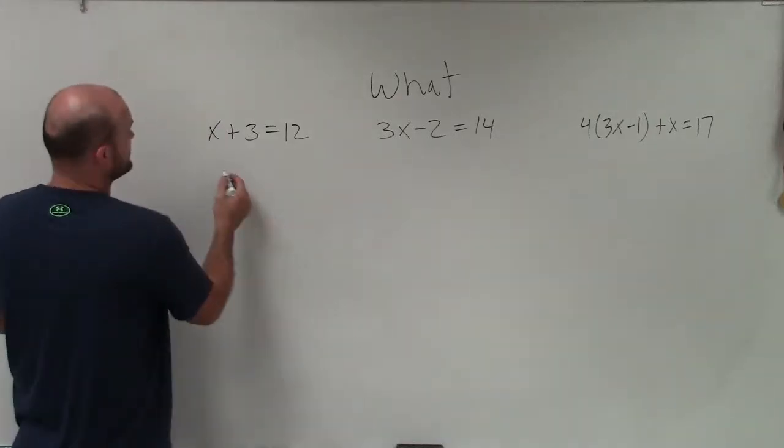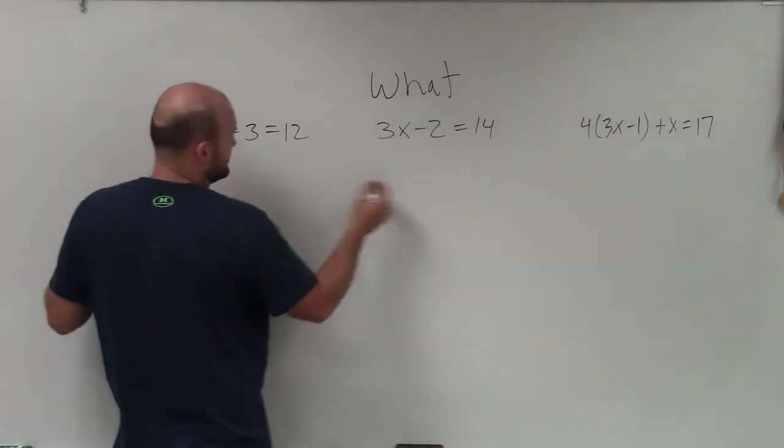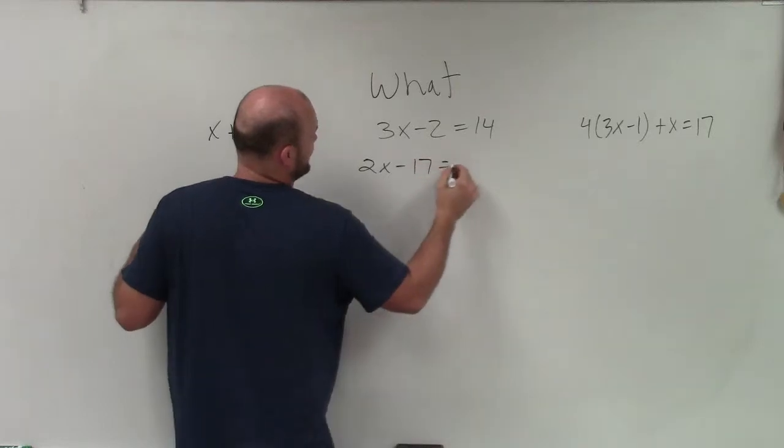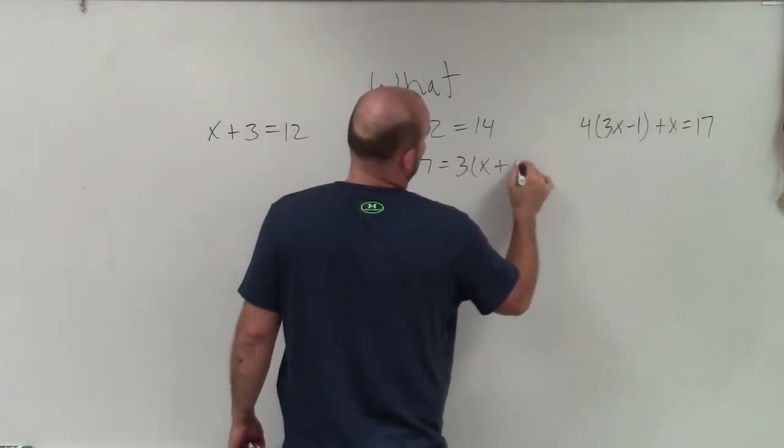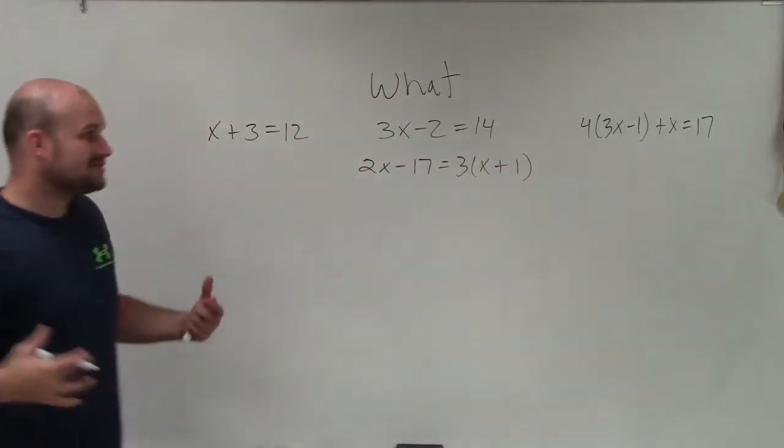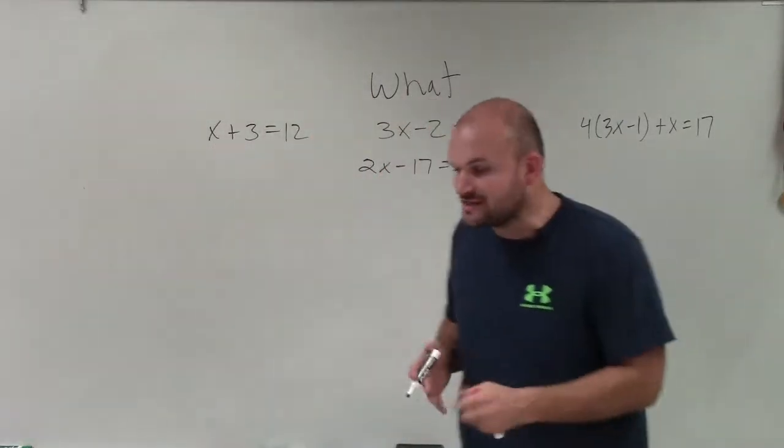And then we got into one where there's variables on both sides. So you got like 2x minus 17 equals 3 times x plus 1. And there, so here's kind of all the different linear equations that we talked about.